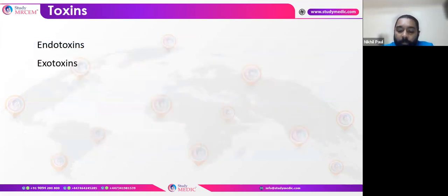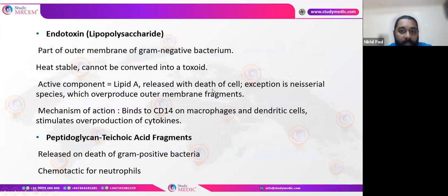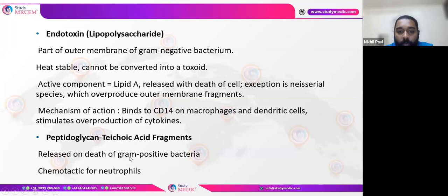Bacteria produce two types of toxins by which pathogenicity is established: endotoxins and exotoxins. Endotoxins are part of the outer membrane of gram-negative bacteria, usually found after the bacteria is dead. They are heat-stable and cannot be converted into toxoid. The active component is Lipid A, released after cell death. The mechanism of action involves binding to CD14 on macrophages, stimulating overproduction of cytokines.